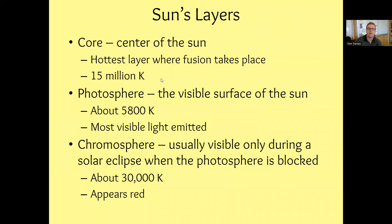It's the hottest layer where fusion takes place. And by hot we mean it's 15 million Kelvin, which is somewhere in the ballpark like 29 million Fahrenheit, really, really hot. The photosphere is the visible surface of the sun. So if you want to think of our crust as our surface, the photosphere is like their surface. And this is where we get the temperature of our sun that we use for the HR diagram. It's about 5,500 Kelvin. This is where visible light's emitted from the photosphere.